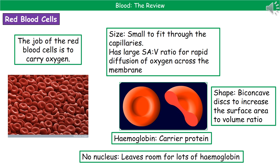If we consider the red blood cells first, their function is to carry oxygen around the body. They have a few adaptations that make them well suited for this purpose. First, they're actually very small to allow them to fit through those tiny capillaries, and they have a large surface area to volume ratio so that oxygen can rapidly diffuse across the membrane.